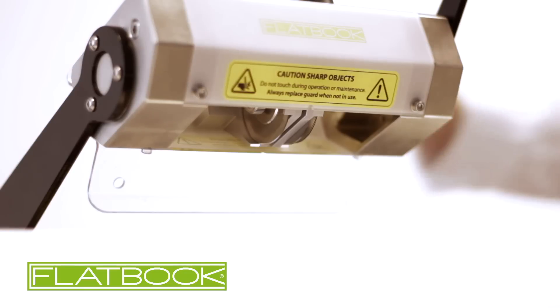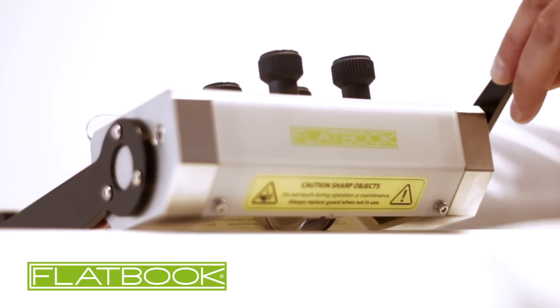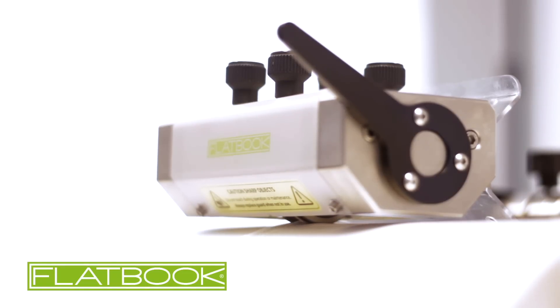Flatbook allows you to laminate both sides of the cover when using a perfect or PUR binding system whilst leaving the spine free of laminate so the adhesive can bond to the cover.